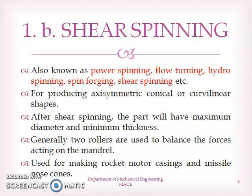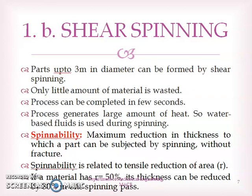We can produce asymmetrical, conical, or curvilinear shapes using this process. After spinning, the parts will have maximum diameter and minimum thickness. Generally two rollers are used to balance the force acting on the mantle. This method is normally used for making rocket motor casings, missile nosecones, and many other asymmetrical shapes. Big parts up to 3 mm diameter can be produced, only little material is wasted, and the process can be completed in very few seconds. However, the process may generate a large amount of heat, so water-based fluids are used during spinning.